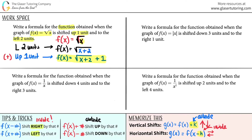Write a formula for the function obtained when the graph of f(x) equals the absolute value of x is shifted down three units and to the right one unit. I like to work left and right first, then ups and downs. So we're going to the right one unit and then down three units.